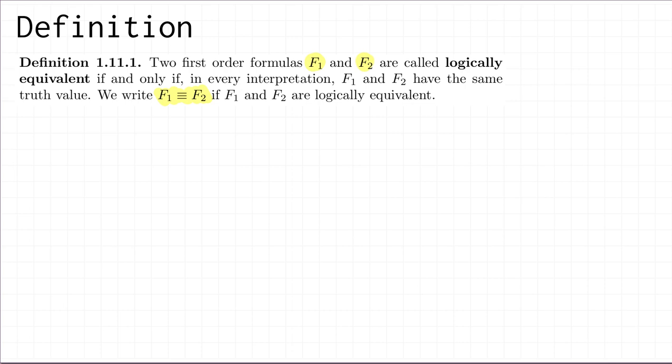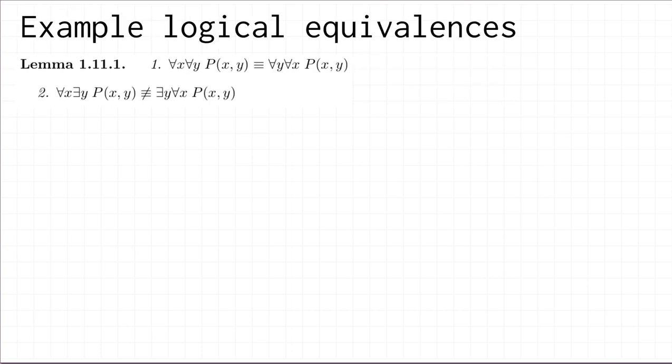It can be quite surprising to learn that non-trivial examples of logical equivalence exist, but in fact there turn out to be a lot of very useful logical equivalences in first-order logic. Here are some simple examples: we're going to have two examples — one of a logical equivalence, and one of two first-order formulas which are not logically equivalent. That symbol means 'not logically equivalent.' Let's do a proof of number one.